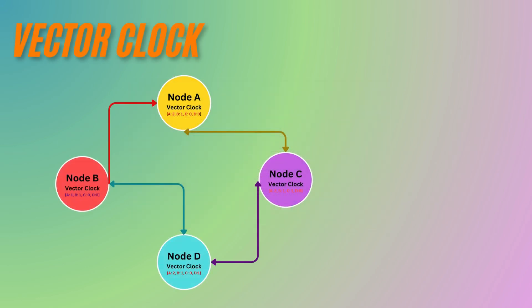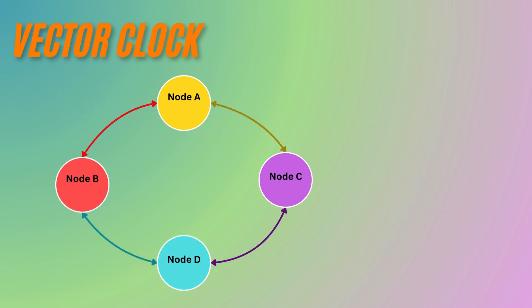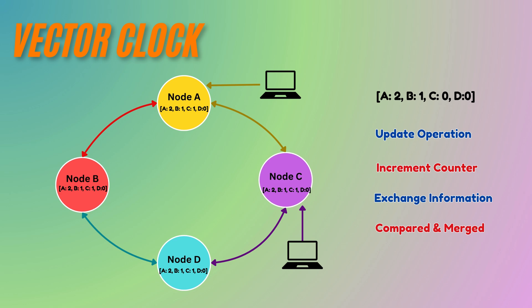A vector clock is a data structure used in distributed systems to capture the order and dependencies between events. This allows the system to detect conflicts when updates are independent or concurrent, but not to directly resolve them. A vector clock is essentially a list of counters — one for each node in the system. Each time a node performs an operation like an update, it increments its corresponding counter. When nodes exchange information, their vector clocks are compared and merged to track the order and dependencies of events.